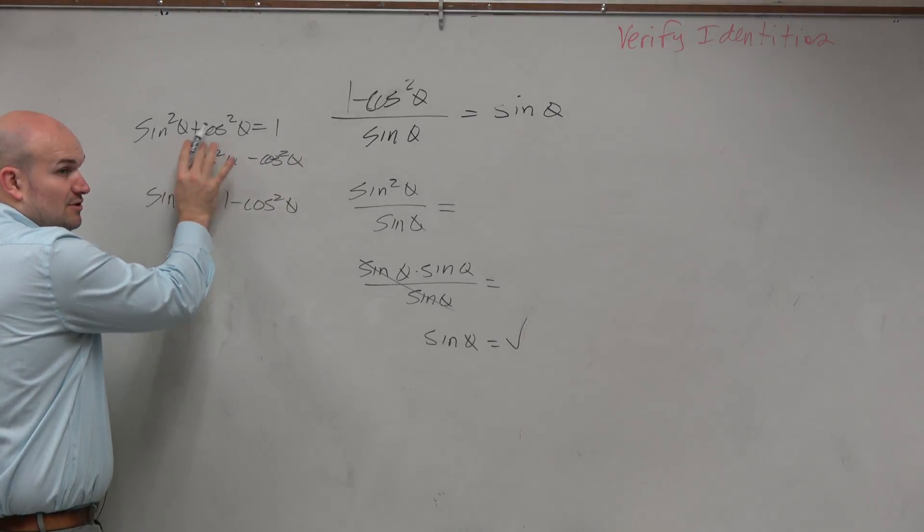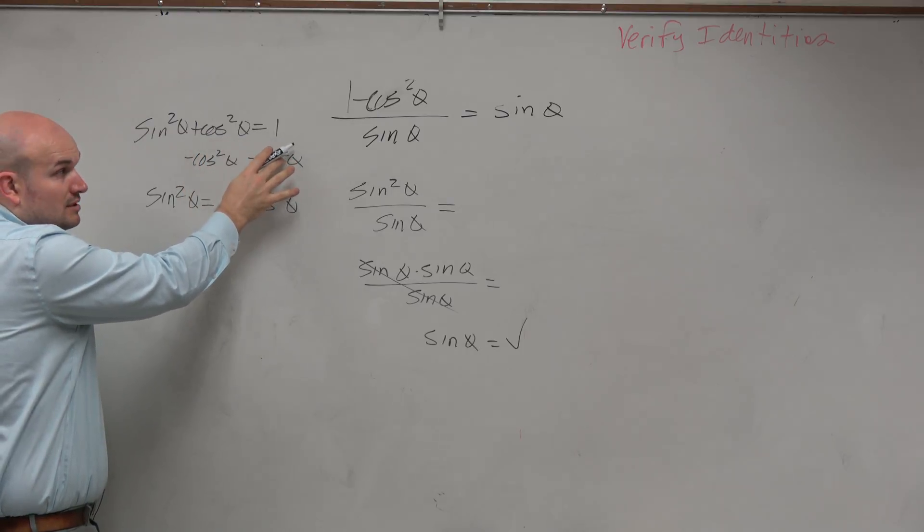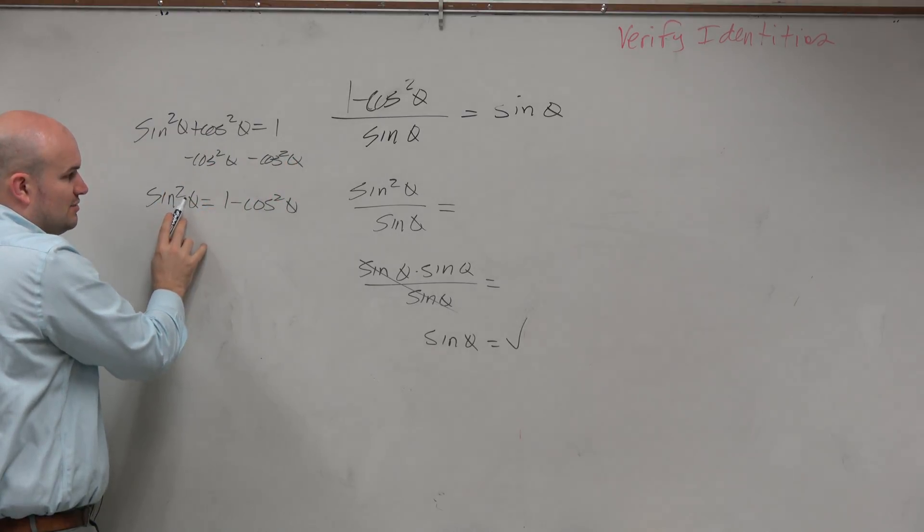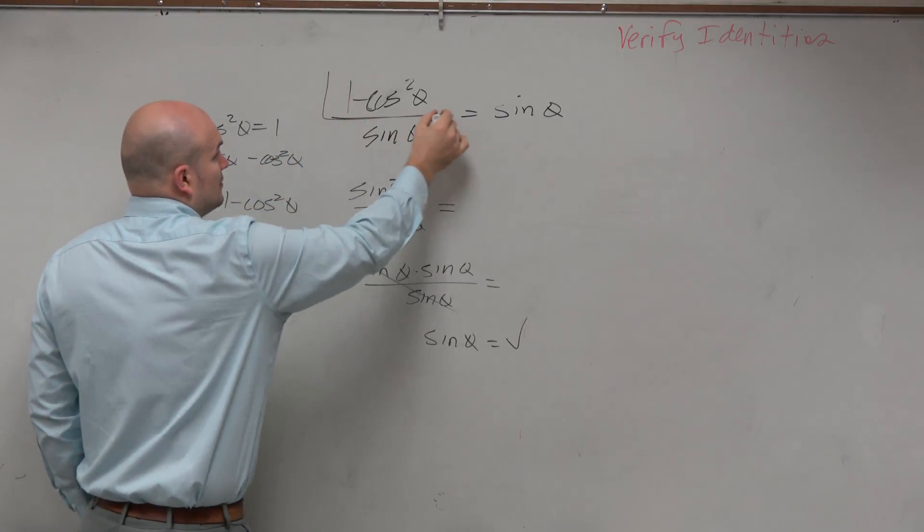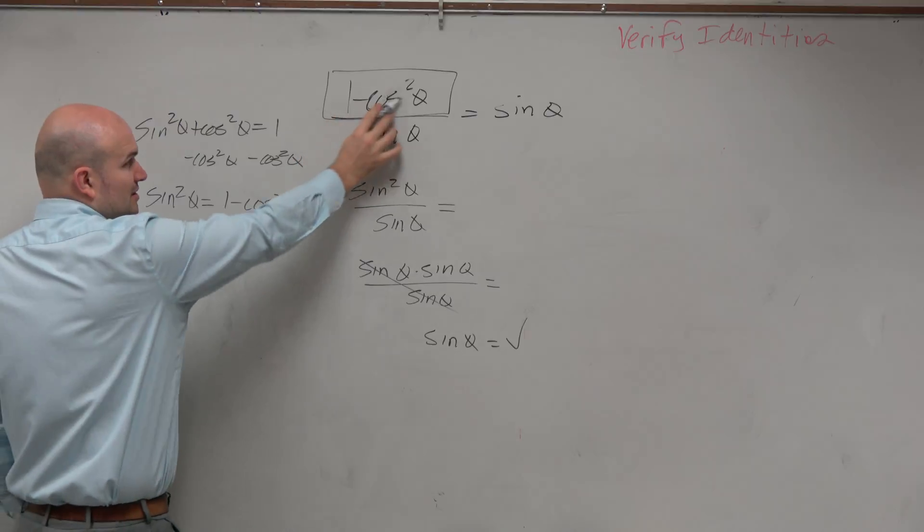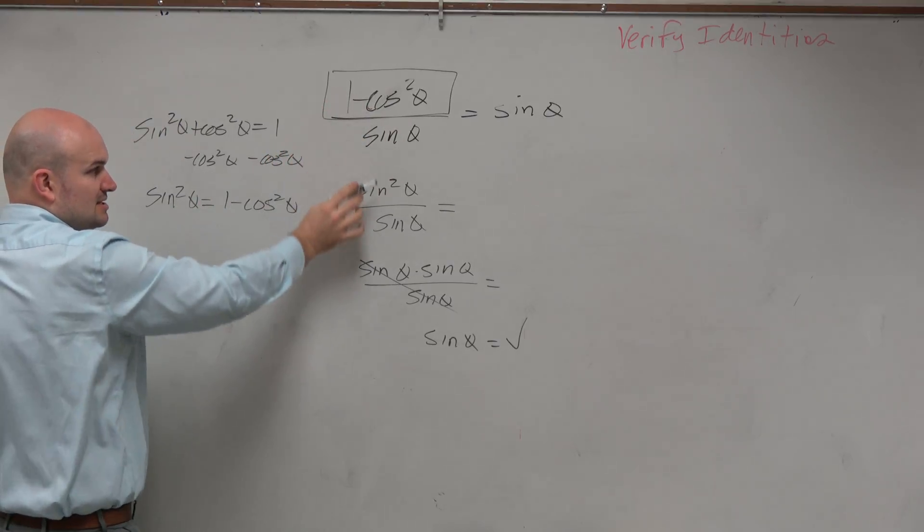So you have sine squared plus cosine squared equals 1. Subtracted cosine of both sides. Sine squared of theta is equal to 1 minus cosine squared theta. 1 minus cosine squared of theta is equal to sine squared. So just replace it.